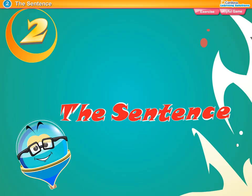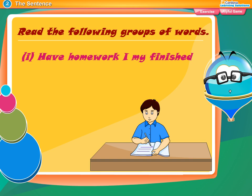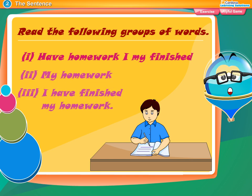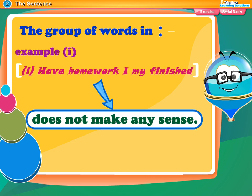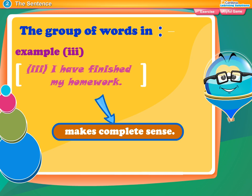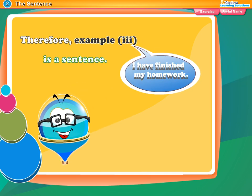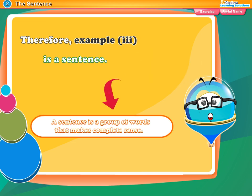Chapter 2: The Sentence. Read the following groups of words: 'have homework I my finished' — 'my homework I have finished' — 'my homework I have finished.' The group of words in example 1 does not make any sense. Example 2 makes sense but not complete sense. Example 3 makes complete sense. Therefore, example 3 is a sentence. A sentence is a group of words that makes complete sense.